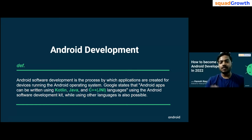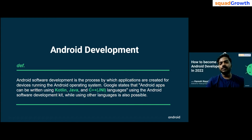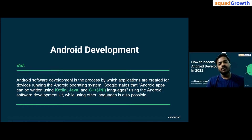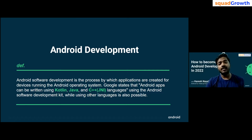What is Android development? Android software development is a process by which applications are created for devices running the Android operating system. Android apps can be written in Kotlin, Java, or C++ via JNI — Java Native Interface — using the Android Software Development Kit. Other languages are also possible, such as Flutter, which uses Dart, Xamarin, and React Native. These cross-platform frameworks can also be used to build iOS apps, and with Flutter you can even build desktop and web apps.